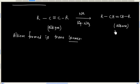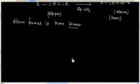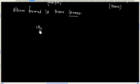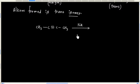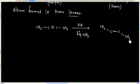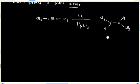An important point is that in this case the alkene formed is the trans-isomer. This means we will have trans-alkene formed. For example, if I have this alkyne and it is treated with sodium in liquid ammonia, finally we will have trans-alkene.